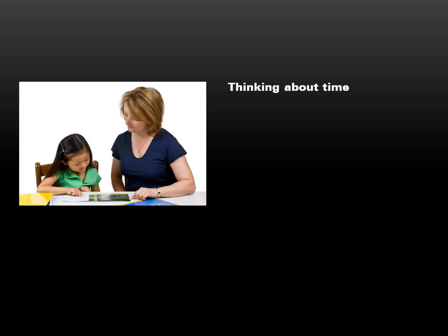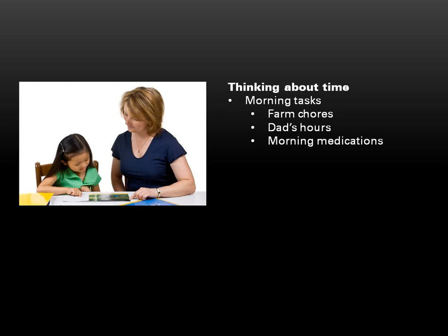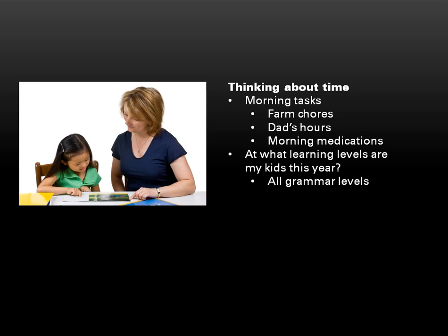I consider other factors that affect when we have school hours, and I start making notes into the schedule. Do we have morning tasks that I must take into account, such as maybe we live on a farm that demands daily morning chores, or dad works the swing shift, or there's a handicapped child in the house who needs morning medications given? Here's another question: at what learning levels are most of my children in the coming year? Families with all grammar-level children will function much differently than ones with all older kids, or with a wide range of students on various levels. If you have children on various levels, you're going to have to be more structured in your overall schedule in order to get all the lessons done.